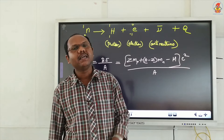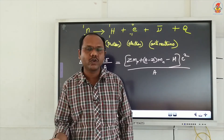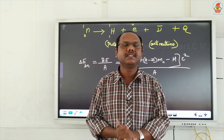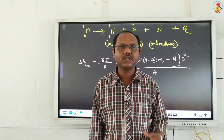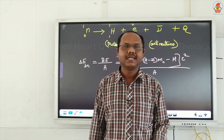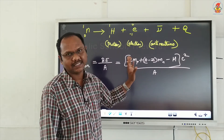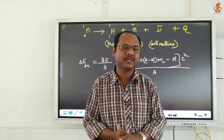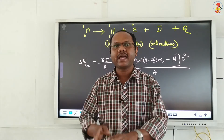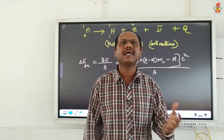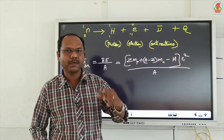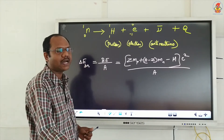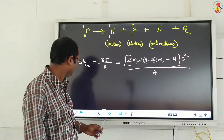Why is this important? If the binding energy per nucleon is more, that nucleus is more stable. If the binding energy per nucleon is less, that nucleus is less stable. So the stability of the nucleus depends on the binding energy per nucleon — that is the significance. There is one graph showing binding energy per nucleon versus mass number. That graph is excluded from our syllabus, but I am just showing it so I can explain nuclear fission and nuclear fusion.